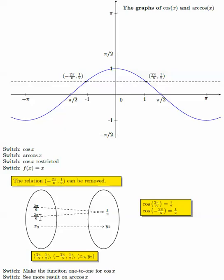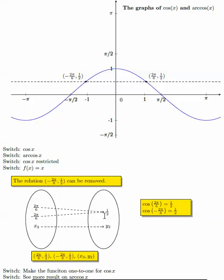This is not 1-to-1. A 1-to-1 function requires different elements in x to have different elements in y. Algebraically, if the second coordinates are the same but the first coordinates are different, then the relationship is not one-to-one. You can check if a function is one-to-one in three different ways.